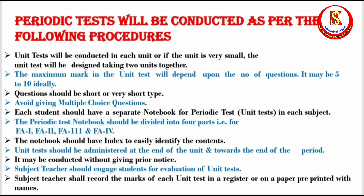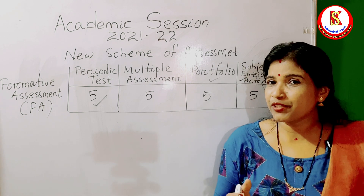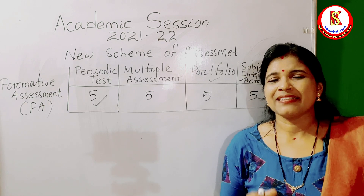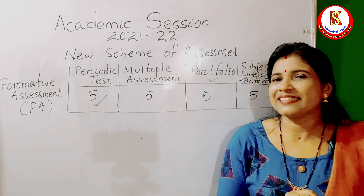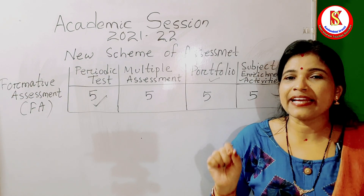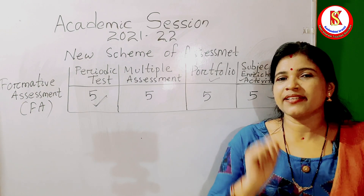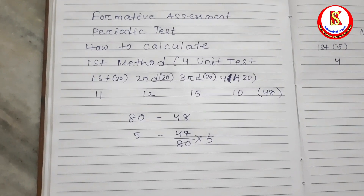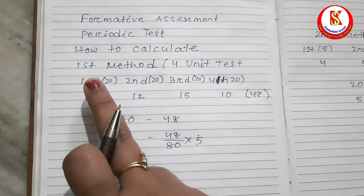There are two ways to do this. Either we can conduct exams out of 20 every time and finally at the end convert to out of five — which is somewhat difficult — or we can conduct four small tests each out of five, one after every chapter, then find the average, which also gives a result out of five and is easy to calculate. Let me explain both methods.